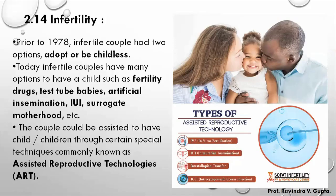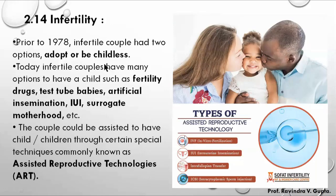If we consider the year 1978, prior to 1978, an infertile couple had only the option to adopt a child. So if a couple could not have a child, ultimately they would adopt another child. Before IVF became available, adoption was the primary option.